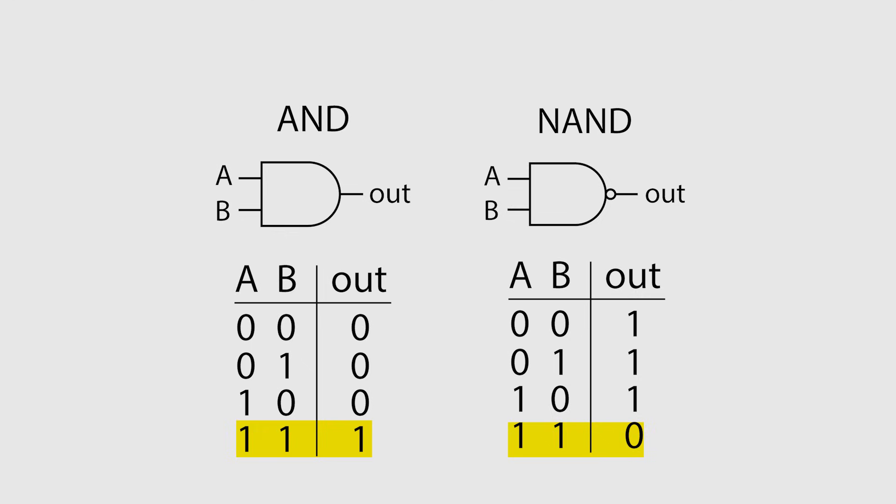When A AND B are high, a NAND gate is not high, but the inverse, output is low. In all other conditions, the NAND output is high, where an AND output would be low.